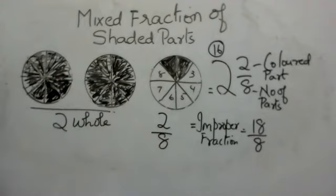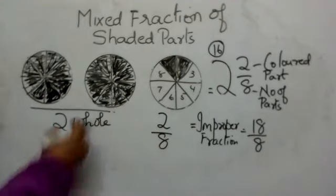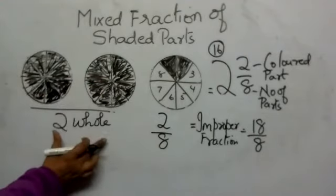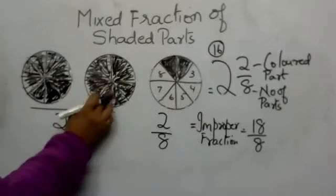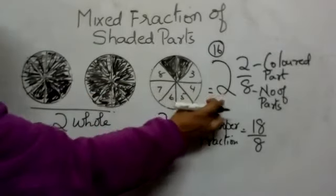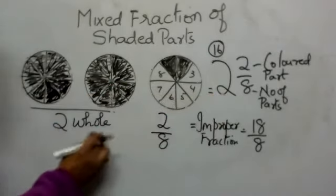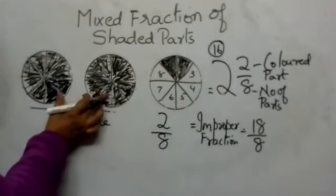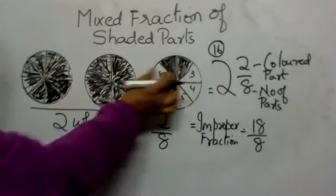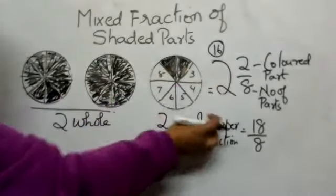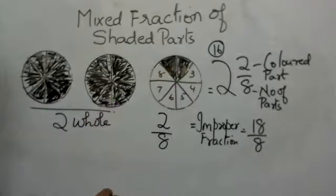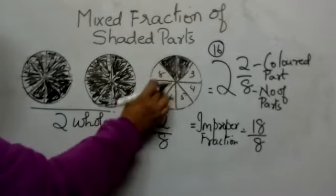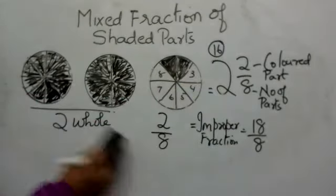To find the mixed fraction, you have to write the whole number first. Two wholes are colored, so you write two. And two parts here are colored out of eight parts, so the fractional part is two by eight.